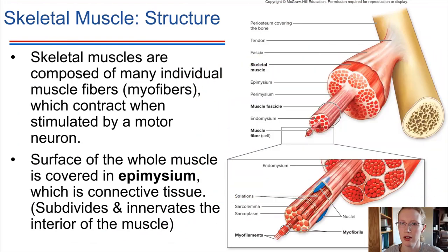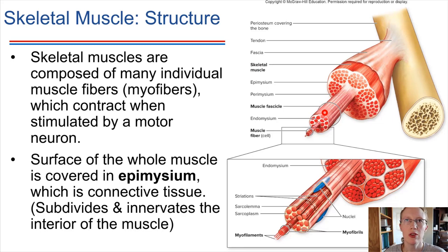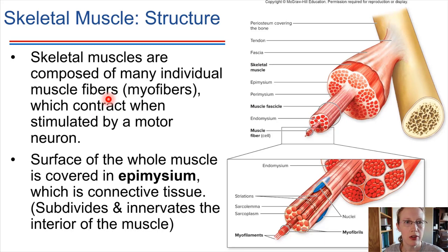Skeletal muscles are muscles that attach to bones — they attach to the skeleton and allow us control over our skeletons. We have voluntary control over skeletal muscles, so we can choose when to contract them or not. When we say muscle fiber, that is referring to muscle cells. We call them fibers because they are elongated. Muscle fibers can be activated to contract by motor neurons, so we'll be revisiting a bit about the nervous system later in this chapter.